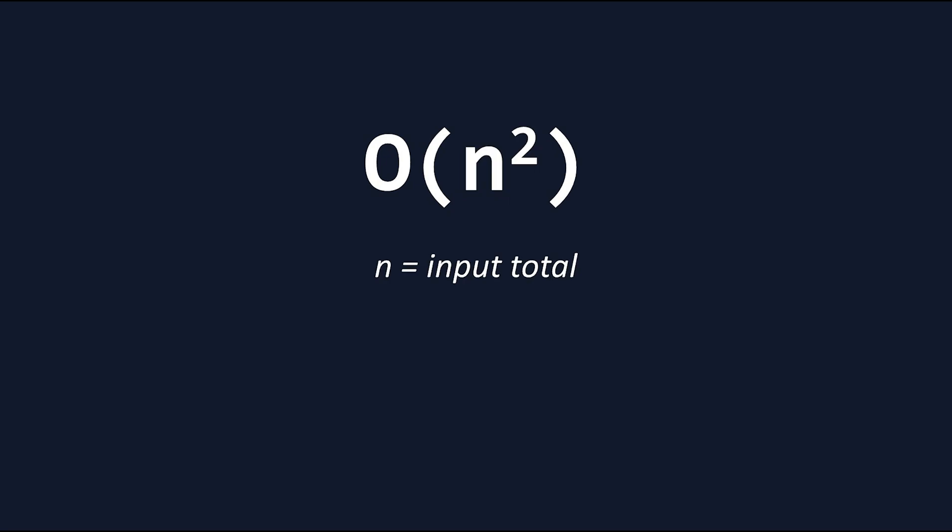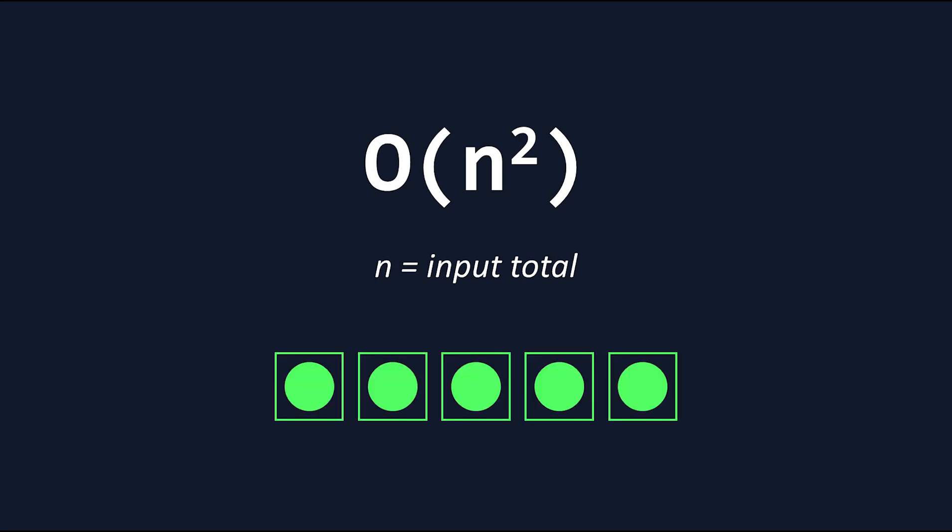Big O functions use n as a variable, which refers to the amount of input into the algorithm. So if an algorithm was going through an array of 5 elements, n would be 5.